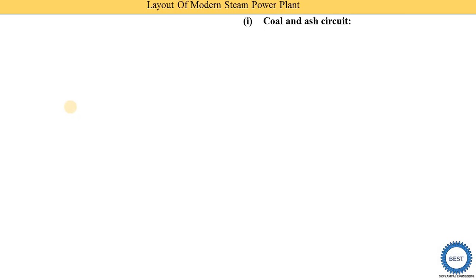Now let's understand the coal and ash circuit. This name is given based on its input and output. We supply coal to the furnace as input. When the burning of coal is going on, flue gases are produced. At the end of burning, a byproduct called ash remains. So coal is the input and ash is the output. In the boiler, one component is the furnace, where coal is combusted in the presence of air.